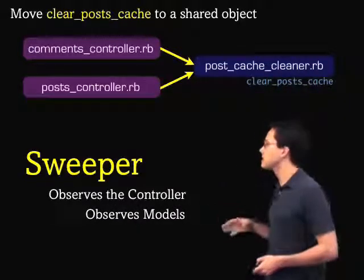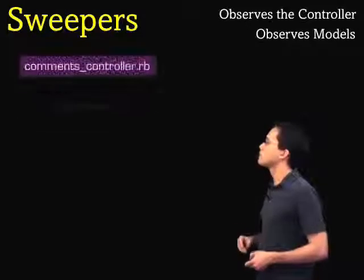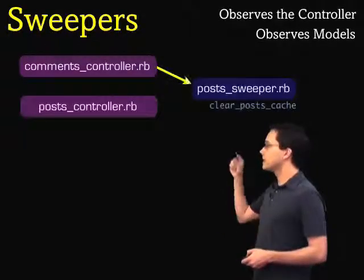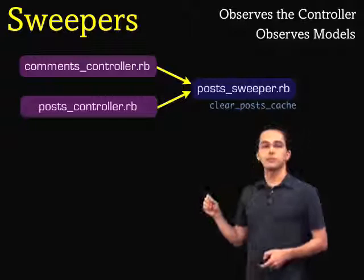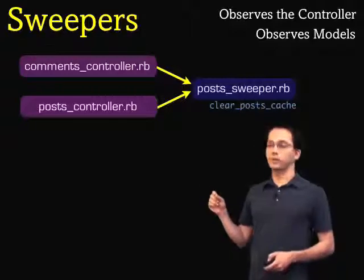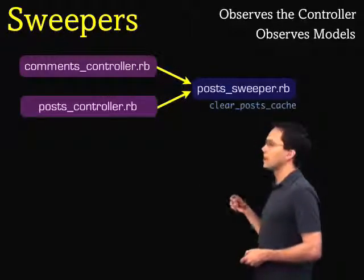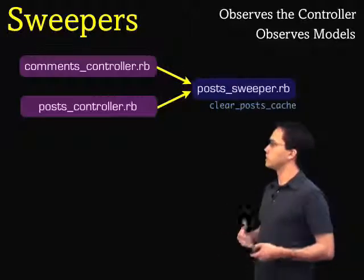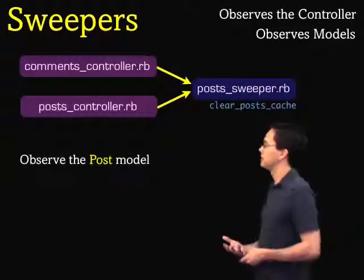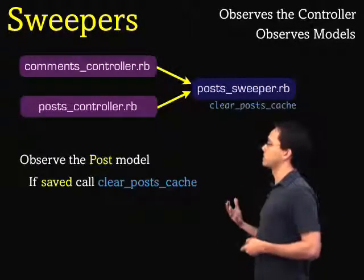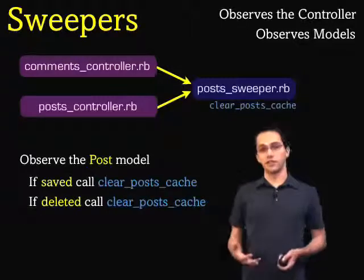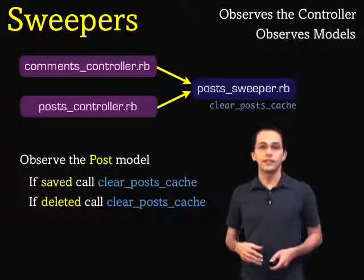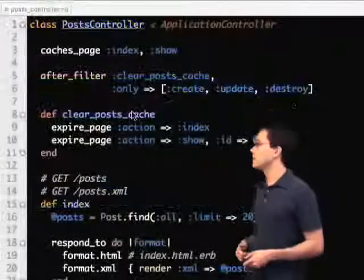So let's see what this looks like. Here's our comments controller, here's our post controller, and basically we're going to link them to the sweeper where we're going to put our function. If we were going to write some pseudocode, we might say we want the sweeper to observe the post model — if saved, call the function, and if deleted, call this function. So let's go ahead and implement a sweeper in our application.